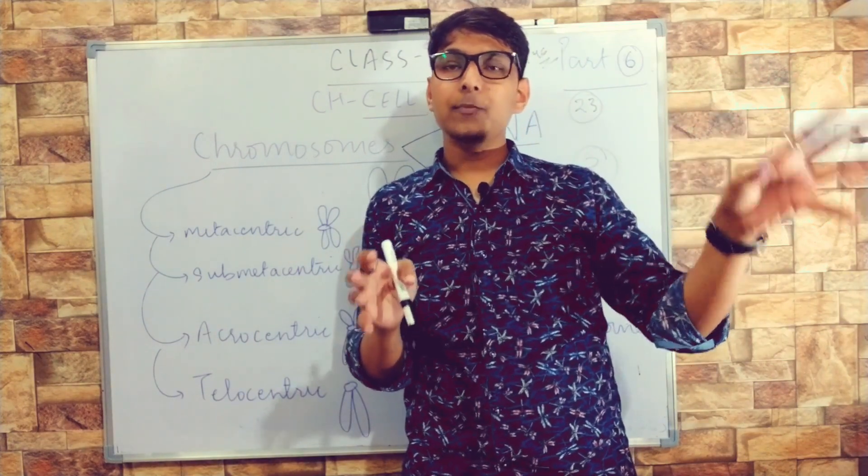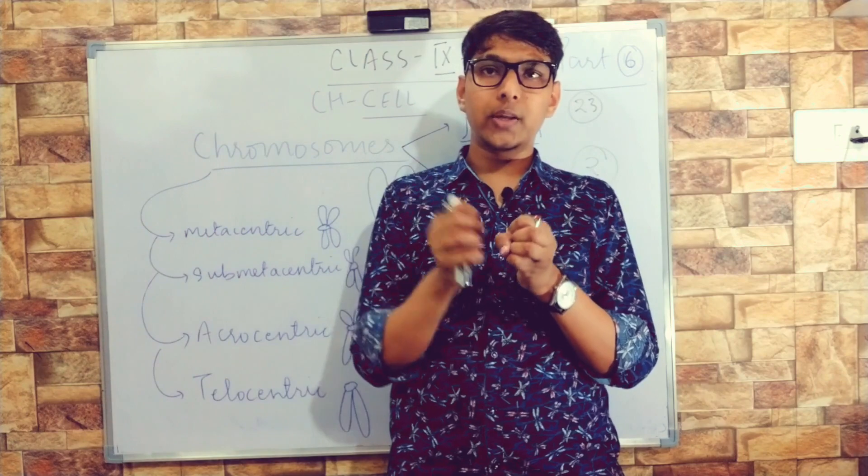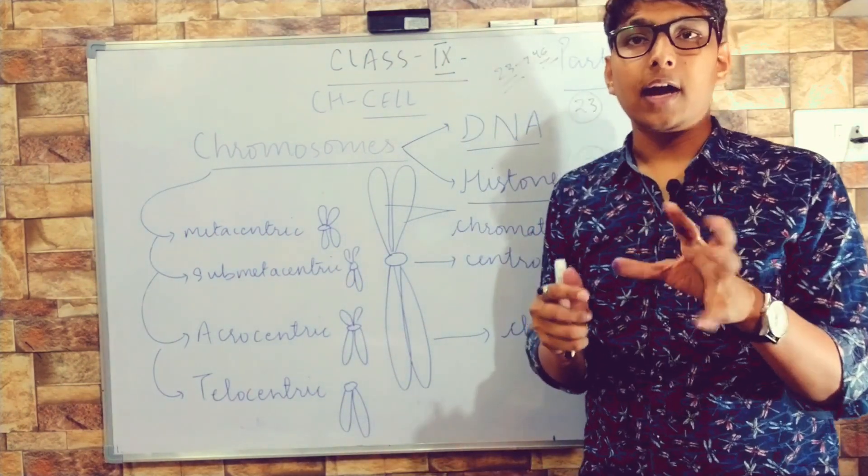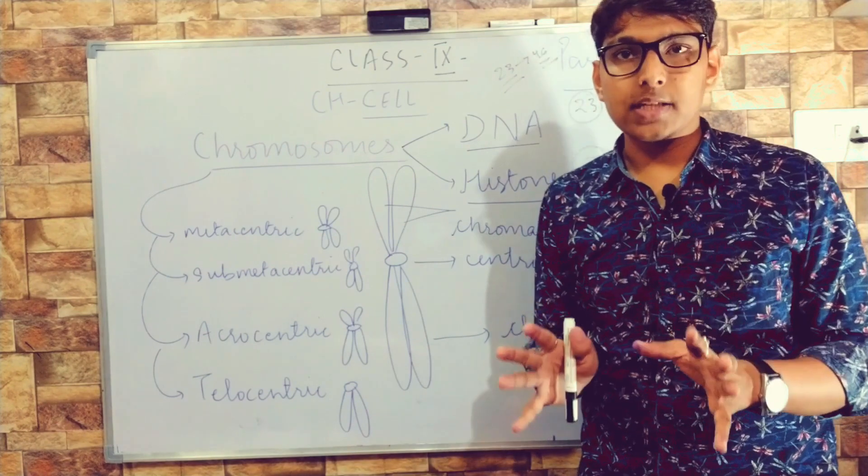Then the zygote will be a diploid cell. Understanding haploid and diploid: to maintain the chromosomal count, haploid cells unite and form diploid cells.